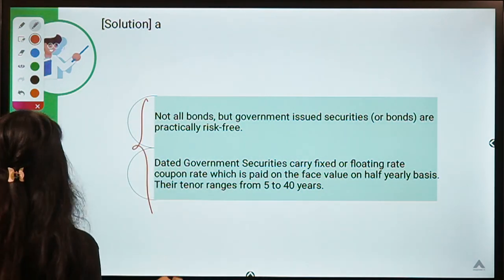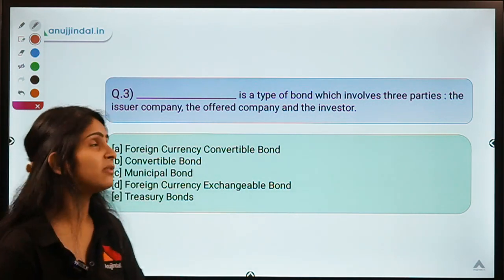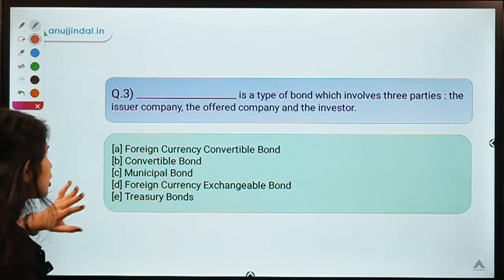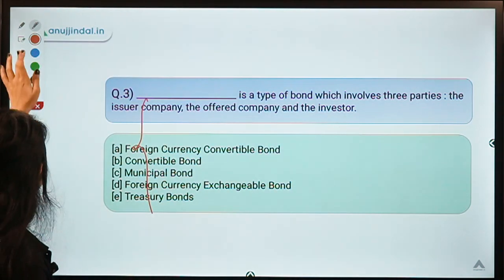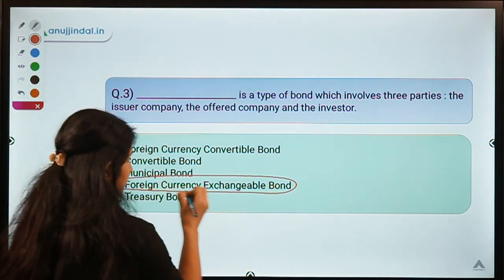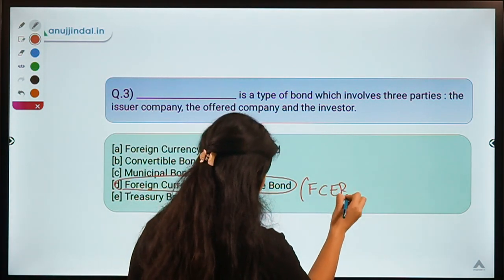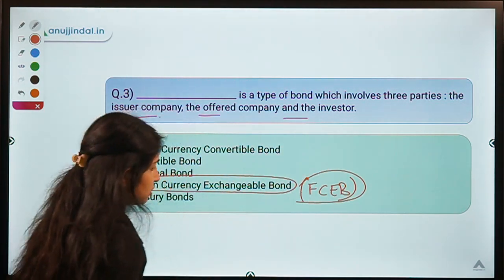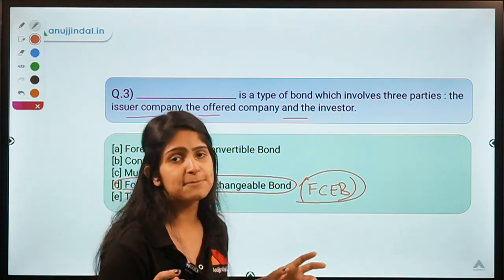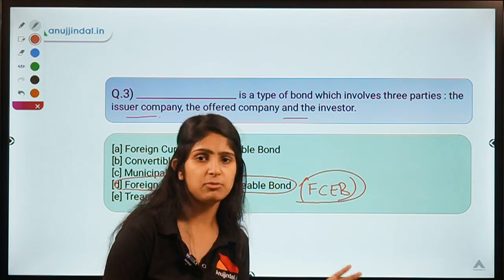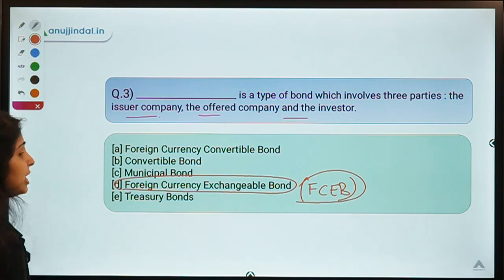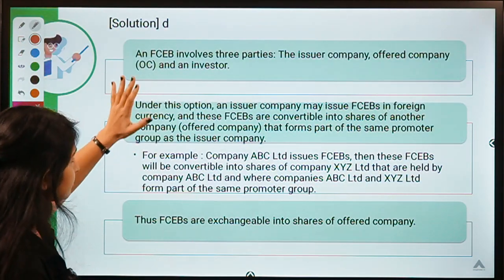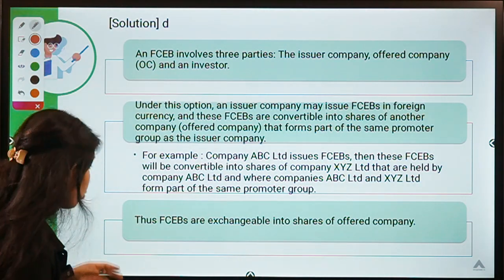Question number three: which type of bond involves three parties — the issuer company, the offered company, and the investor? The correct answer is option E: Foreign Currency Exchangeable Bond, or FCEB. Usually when bonds are issued there are only two parties — the issuer and the bond holder — but FCEB uniquely involves three distinct entities.